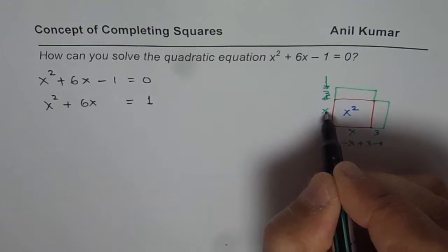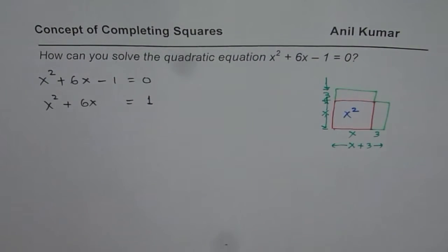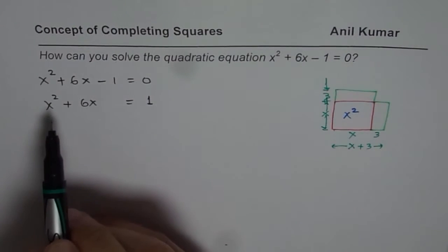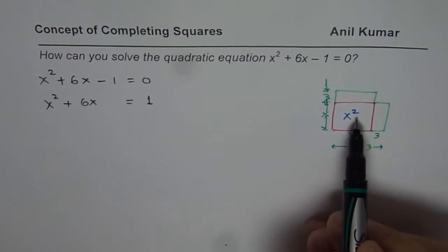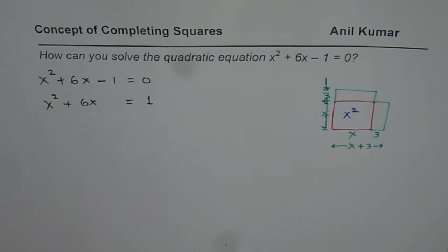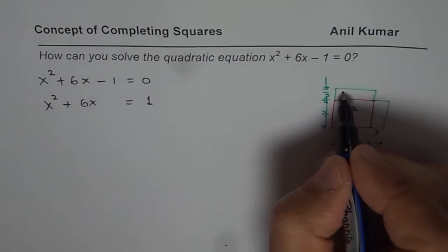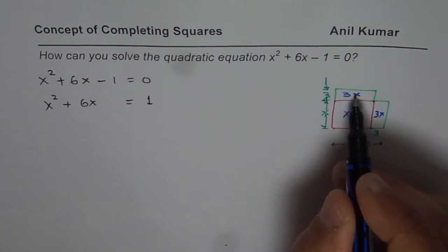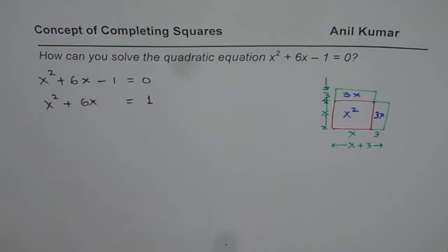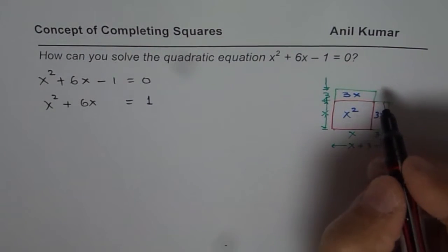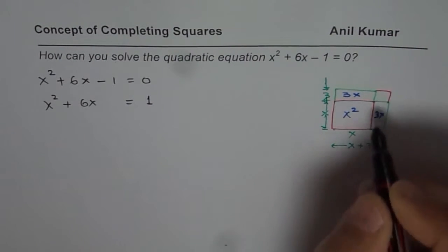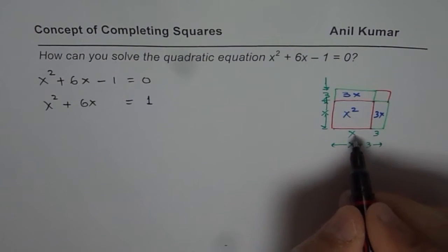I have a figure which represents the area of left side of my equation, x² and the area of this small portion of the rectangle is 3x and here also it is 3x. So x² + 3x + 3x is x² + 6x. Now if you see this figure, you find that if I can somehow close this, I make a perfect square whose dimensions are x + 3.